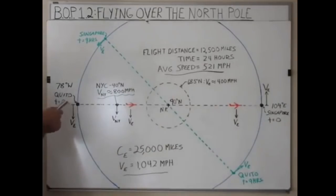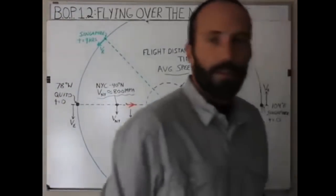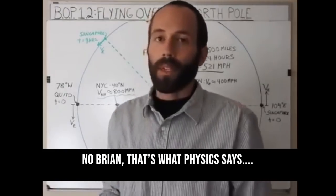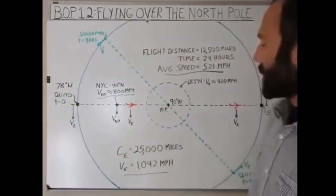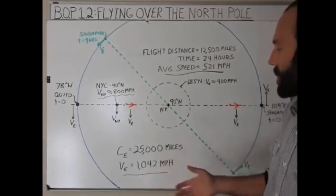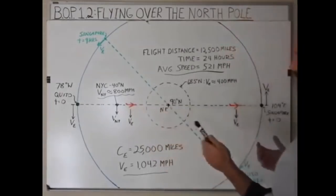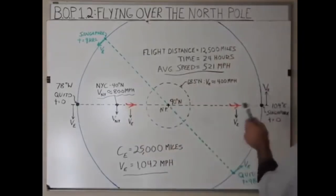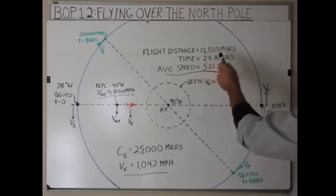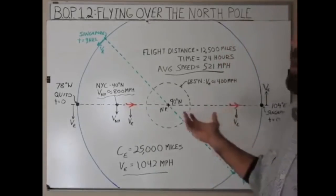The runway at Quito actually faces almost due north, so we can say the pilot is going to start off and fly directly at the north pole. When a plane is sitting on the runway, it's moving with the earth. If the earth is rotating about its axis, we're all moving at different speeds based on how far we are from the equator. At the equator, the circumference is 25,000 miles, and the earth makes one rotation in 24 hours. We're going to say the flight from Quito to Singapore takes 24 hours, and that distance is 12,500 miles, giving an average flight speed of 521 miles per hour.